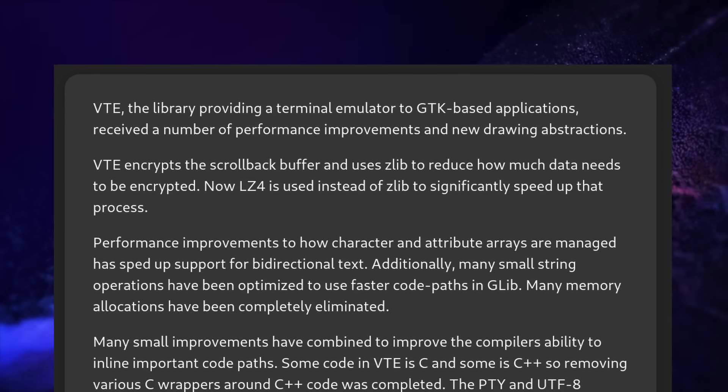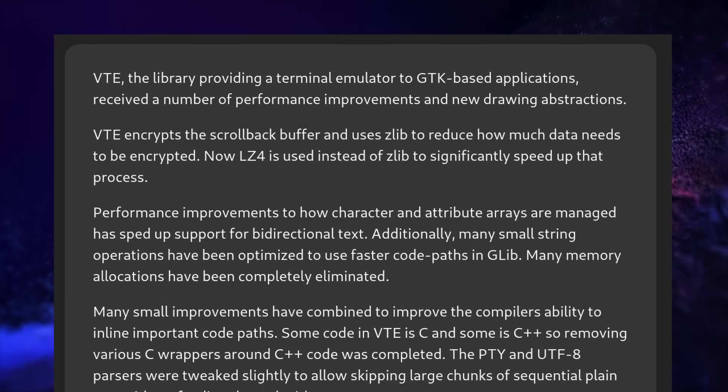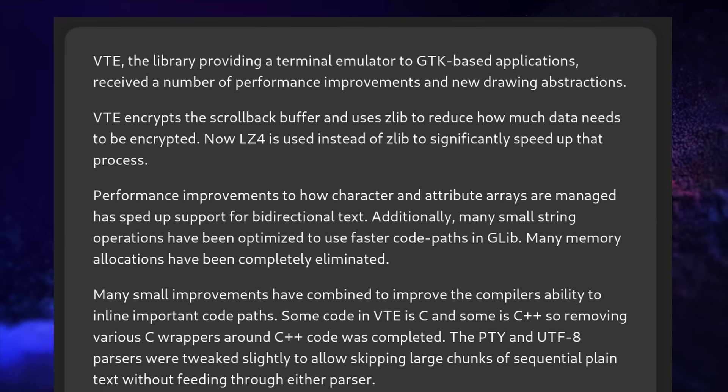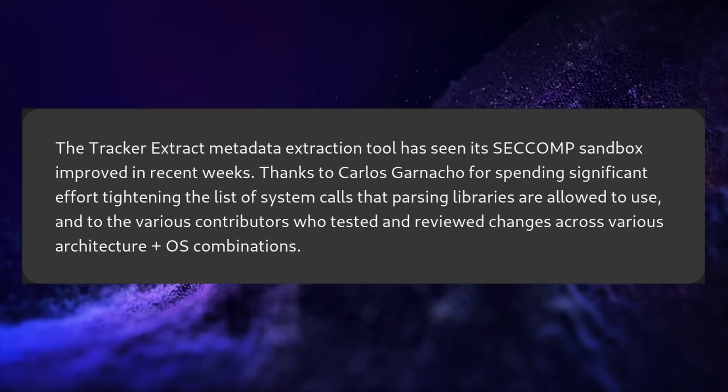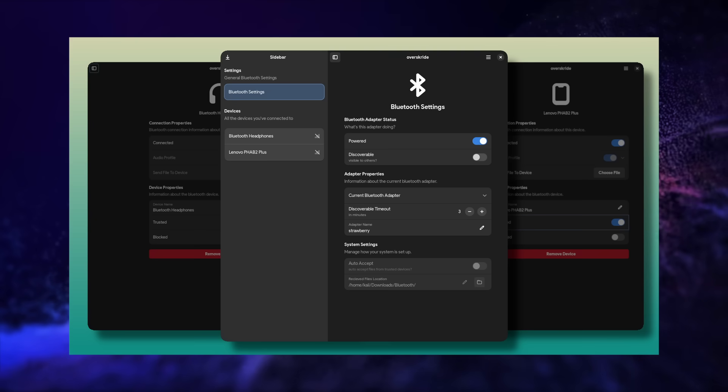Very good progress here, and judging from the components they're now working on and sharing, I would say they couldn't be far off from an alpha release of Cosmic. On the GNOME side, they improved the performance of VTE, the library used to build terminal emulator apps like the GNOME console app — it uses a better compression algorithm and a lot of code has been optimized. Tracker, the indexer tool that powers GNOME Search, has also received sandbox improvements. In terms of apps, there's Overscrite, a new app to handle Bluetooth devices that lets you send and receive files, authenticate, and support multiple Bluetooth adapters. It's a smaller week than usual on the GNOME side, but it's good to see them working on the actual backend of the desktop.